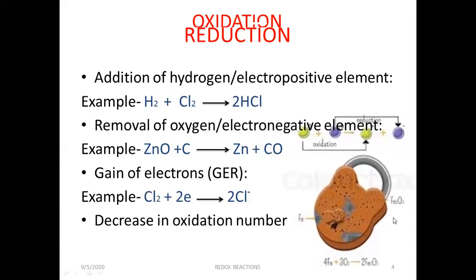This is the process of rusting of iron. Here, Fe plus O2 gives us Fe2O3. Oxygen is added to iron and it forms ferric oxide. This is the process of oxidation.